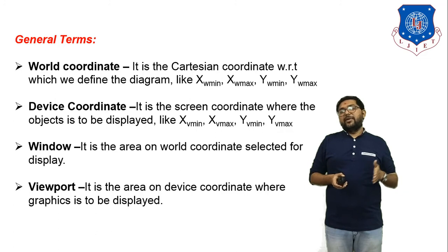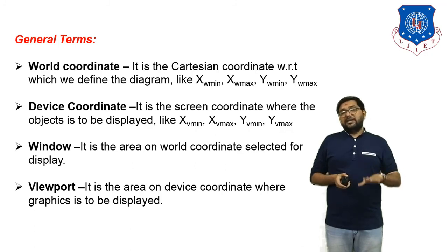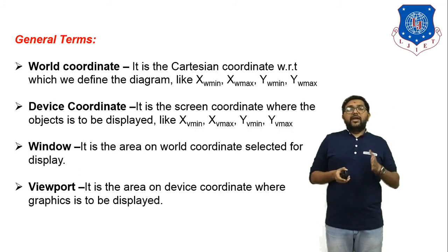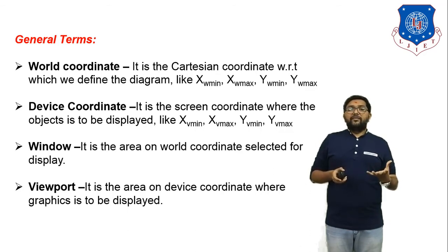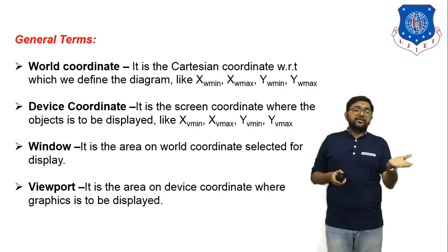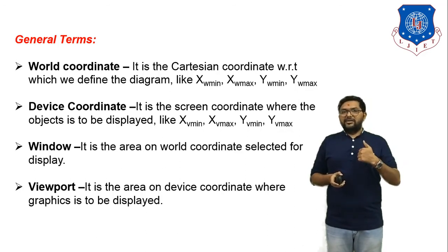In today's session we completed chapter number 4, Geometric Transformation. In the next session we start a new chapter: mathematical representation of solids. In that chapter we will discuss solid modeling, surface modeling, wireframe modeling, and different methods of mathematical representation of solids, including how to convert objects from two-dimensional to three-dimensional.